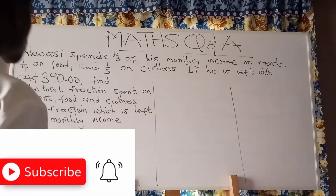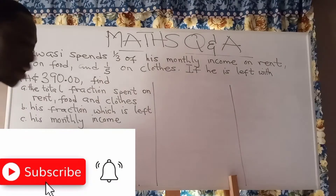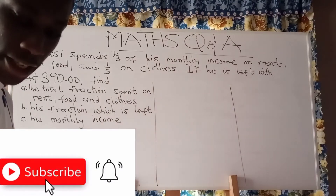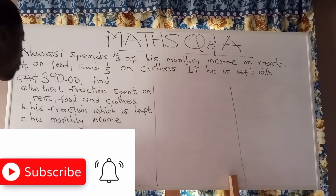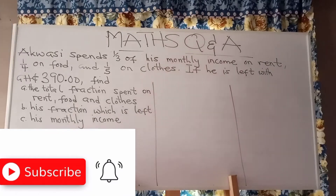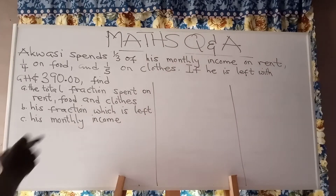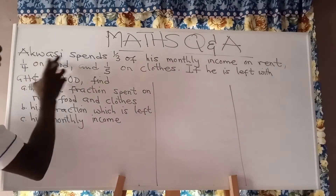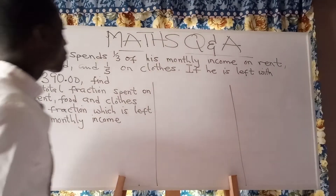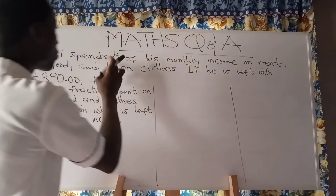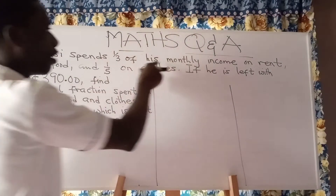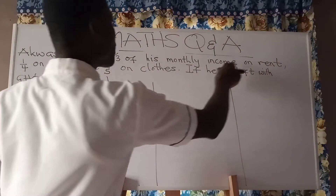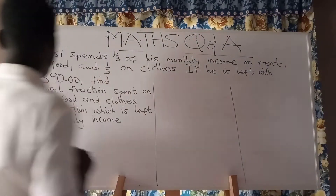Welcome back. We are on fractions — a word problem question on fractions. The question is: a man spends one third of his monthly income on rent,